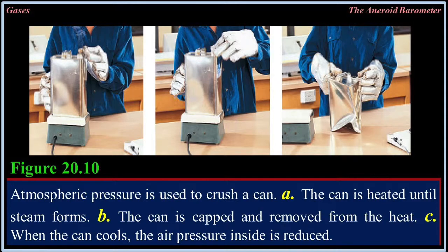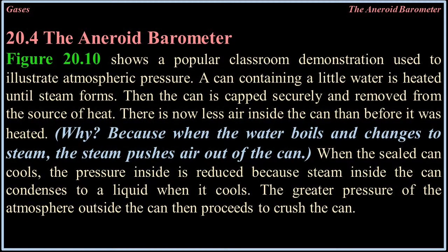20.4 The Aneroid Barometer. Figure 20.10 shows a popular classroom demonstration used to illustrate atmospheric pressure. A can containing a little water is heated until steam forms, then the can is sealed and removed from the source of heat. There is now less air inside the can than before it was heated, because when the water boils and changes to steam, the steam pushes air out of the can. When the sealed can cools, the pressure inside is reduced because steam inside condenses to a liquid. The greater pressure of the atmosphere outside then proceeds to crush the can.